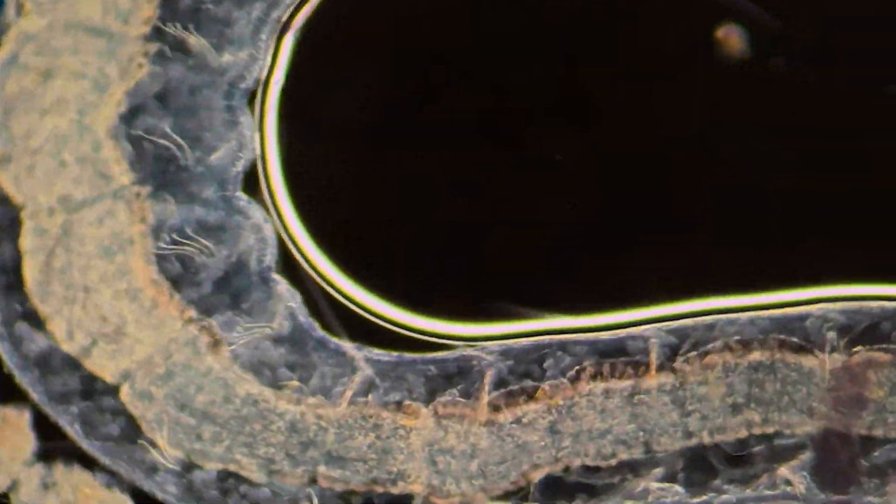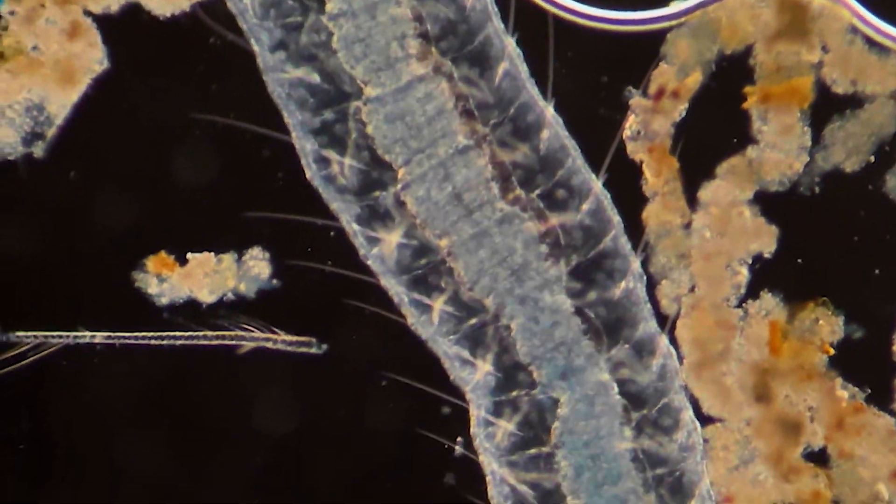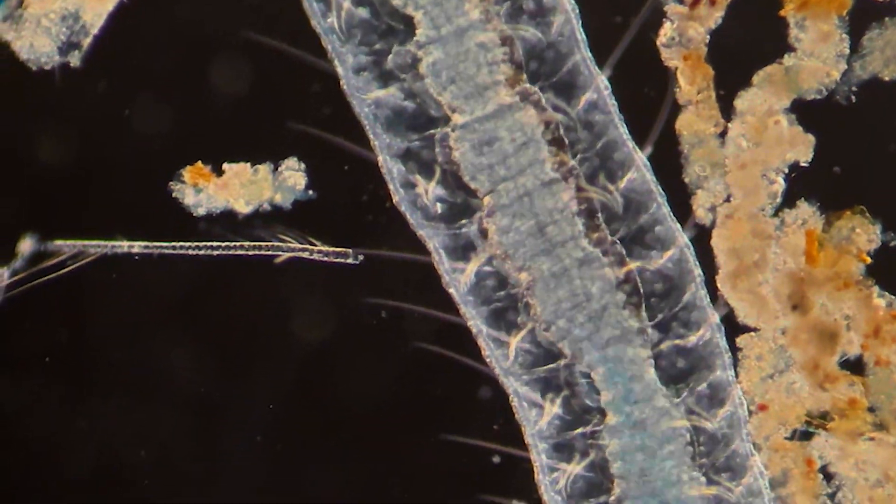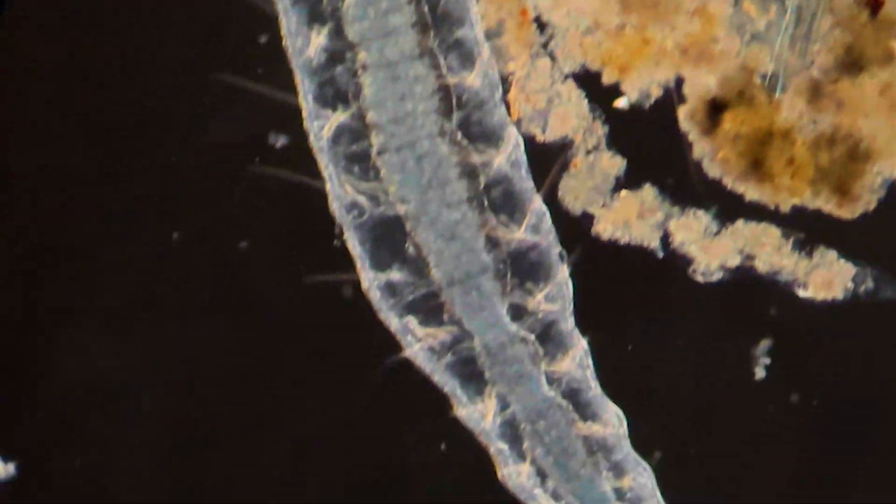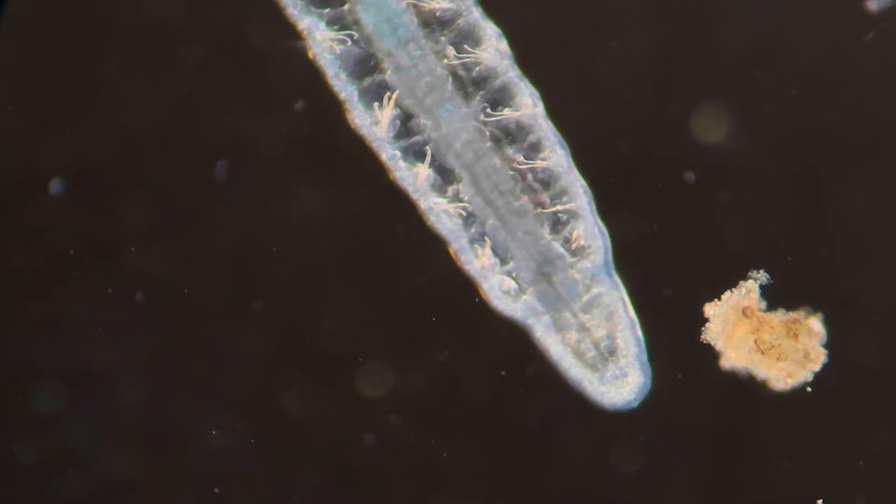Male wasps, strangely enough, remain inside the fruit to fertilize the females and then die, never leaving the fig. The females, however, leave the fruit to continue this unusual life cycle, which has been going on for millions of years.